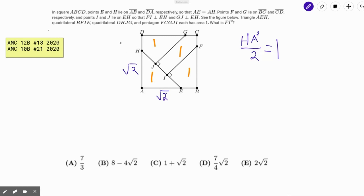So we can label DH as 2 minus √2, which is what's left over. And once again, because of symmetry, we can do the same to EB.